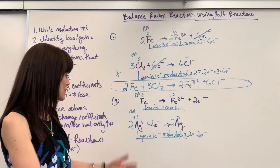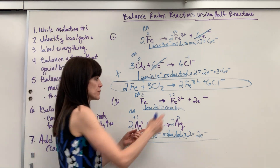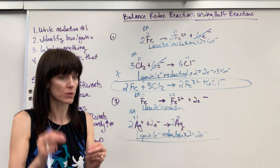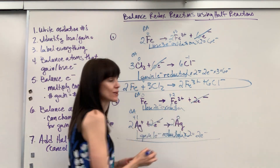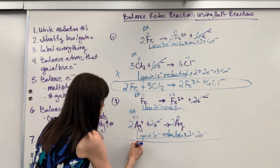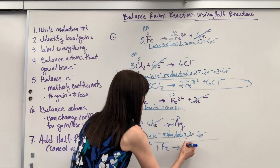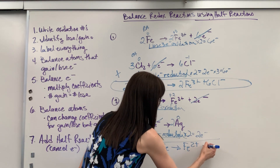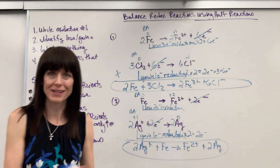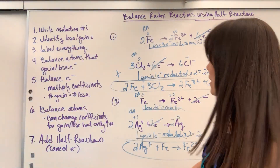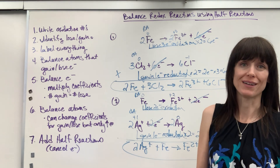Now balance the atoms: one iron, one iron — good. Put a two in front of silver on each side — two silver ions, two solid silver. Last step: add the half reactions. Two electrons cancel on both sides. Final answer: 2 Ag⁺ + Fe yields Fe²⁺ + 2 Ag. That is the balanced redox reaction using the half reaction method. If you have more questions, go to my redox playlist. Thank you!